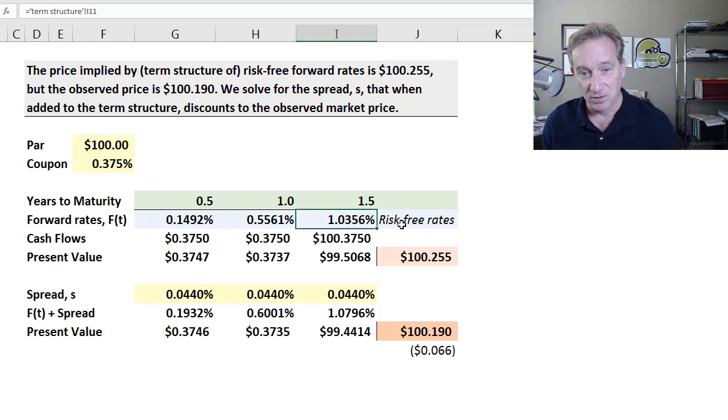So my forward rate, that's my forward rate term structure of risk-free. Now I'm adding a spread, presumably for credit risk to get this term structure here. And now I'm discounting the same future cash flows, but now at higher rates. And I'm getting $100.19 matches the market price. And so that's telling me, this is the spread, the measure of relative value.